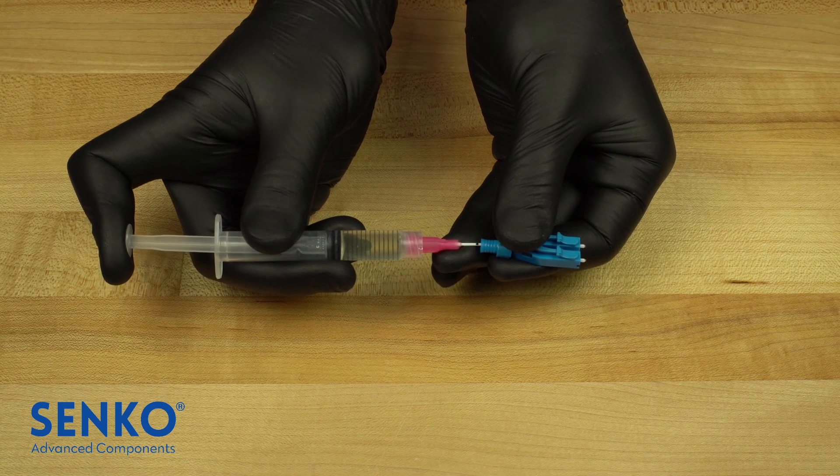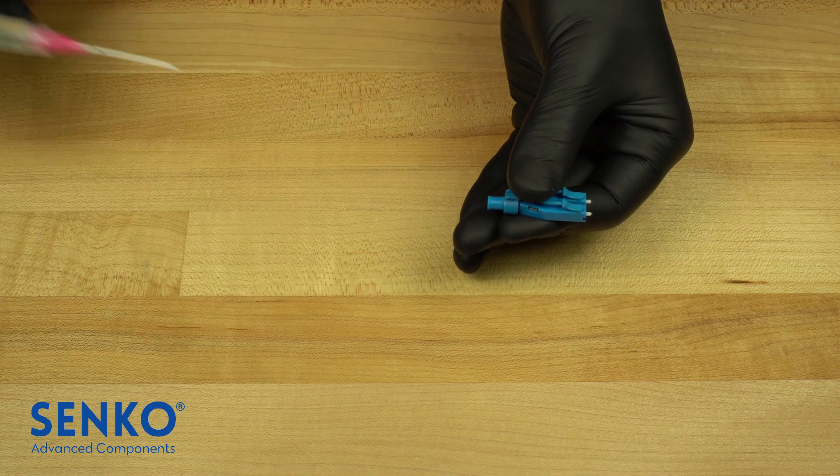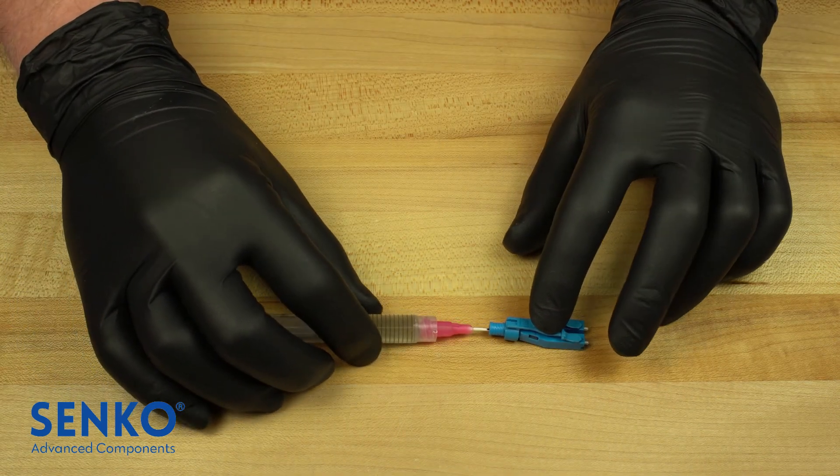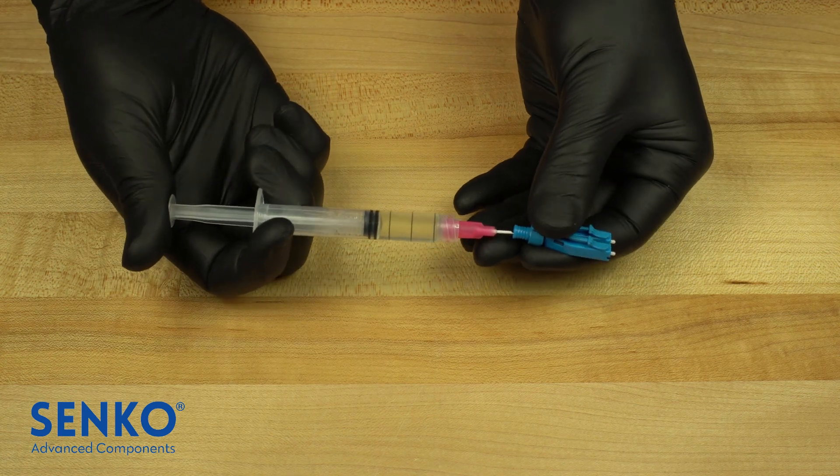Once there is a small bead, keep injecting and retract the syringe tip one millimeter to fill the ferrule flange. Repeat this step for the other ferrule, always ensuring a clean syringe tip.